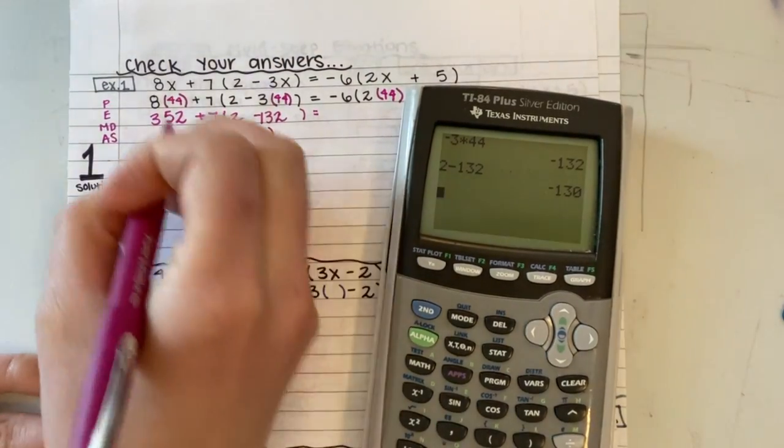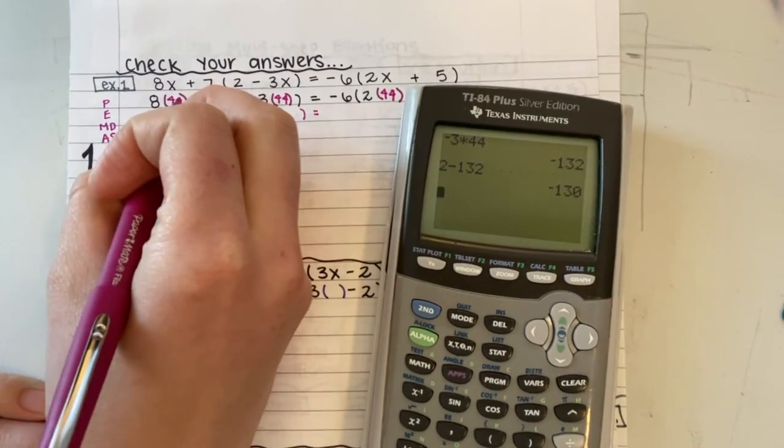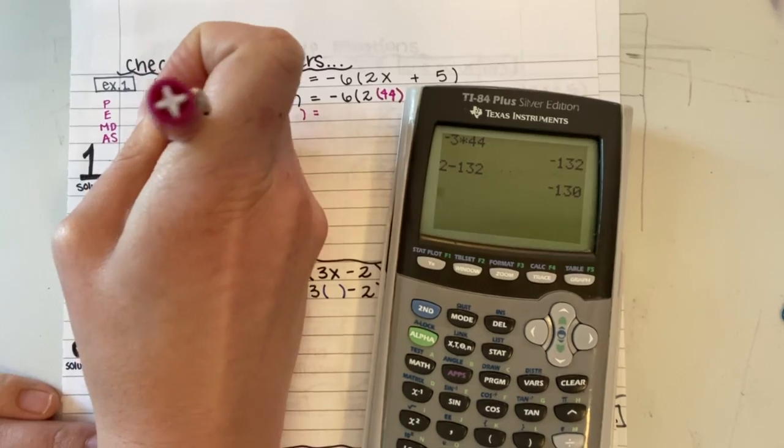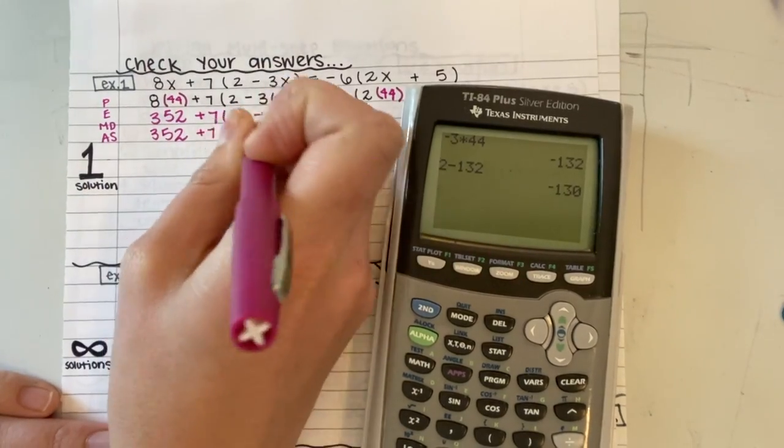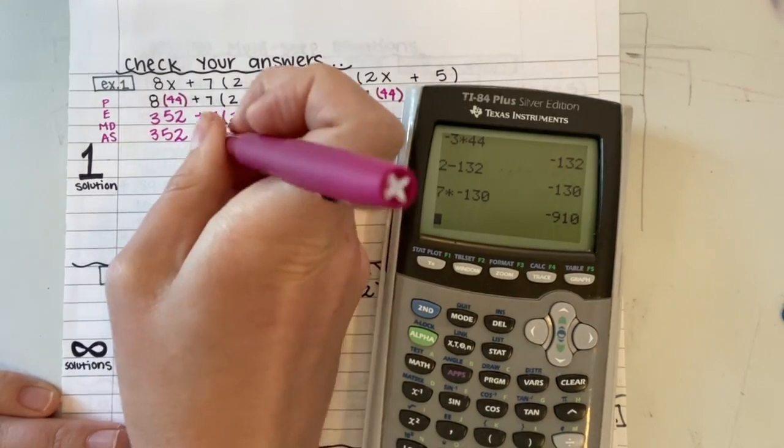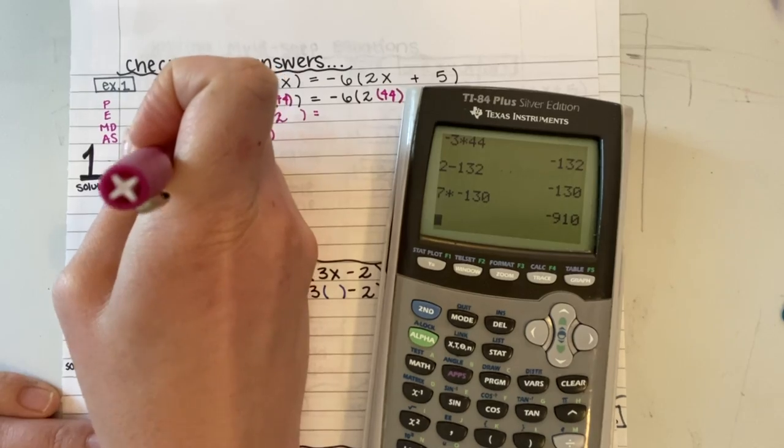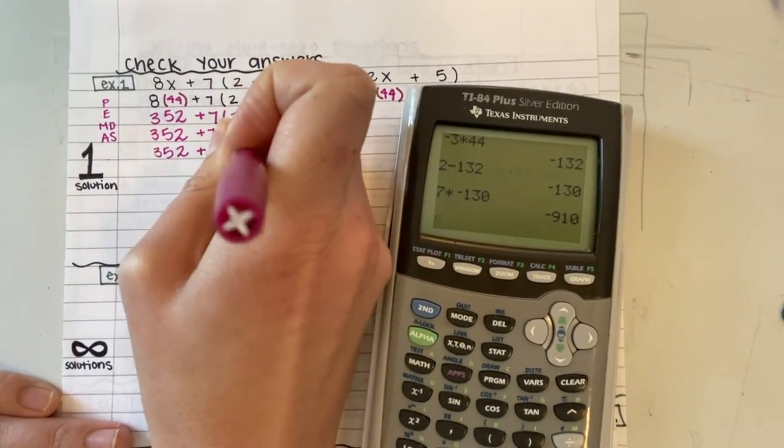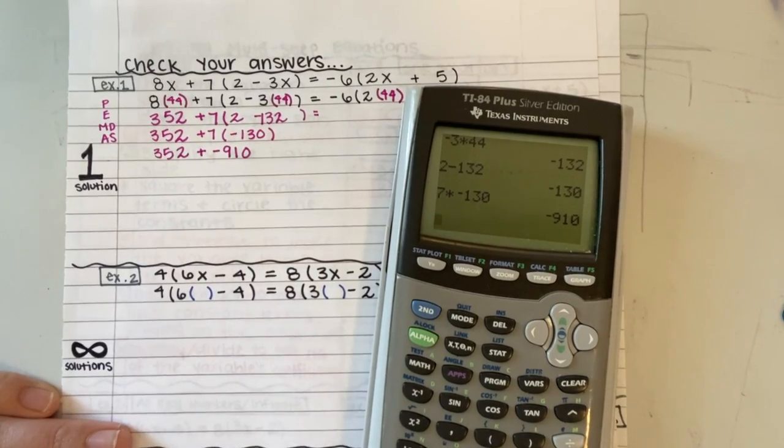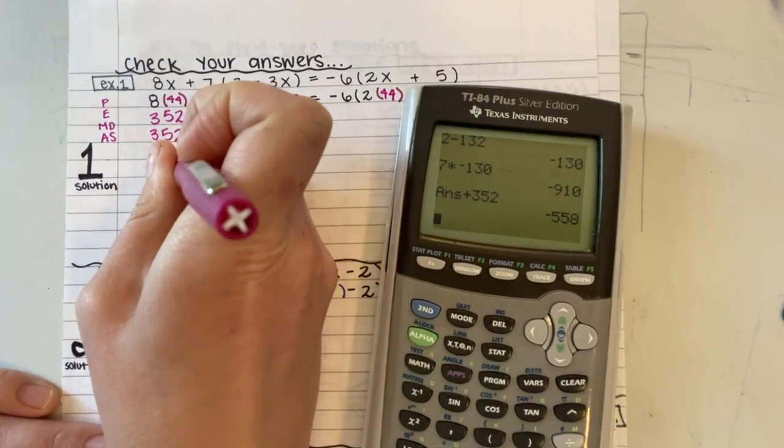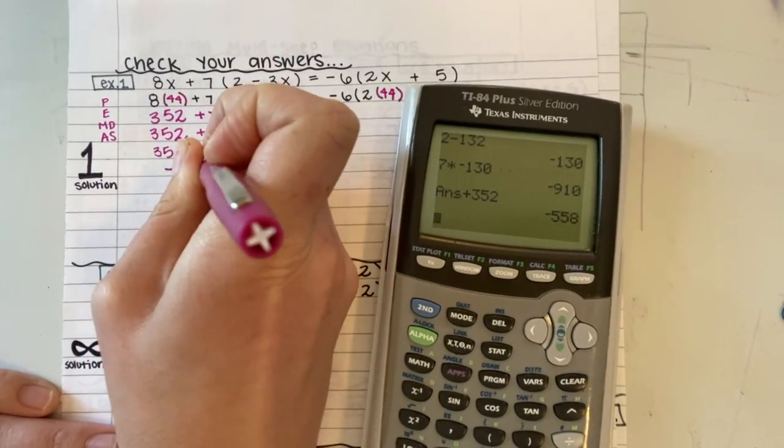What I can do now is the 8 times 44. 8 times 44 gives me 352. I can also do the multiplication. That is 7 times negative 130. And I can get 352 plus negative 910. And now I can do my addition and I get negative 558.